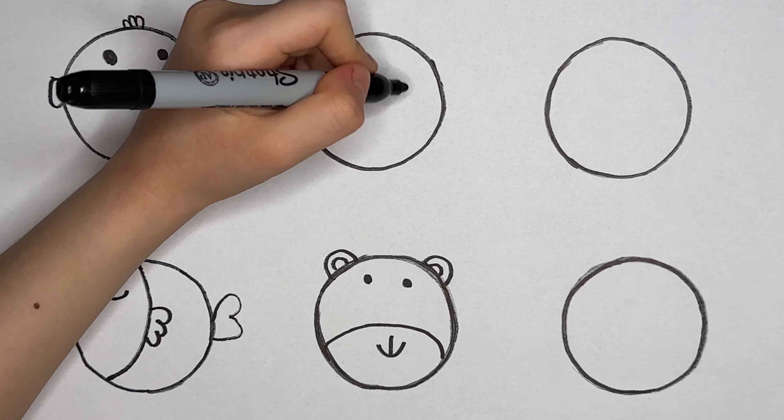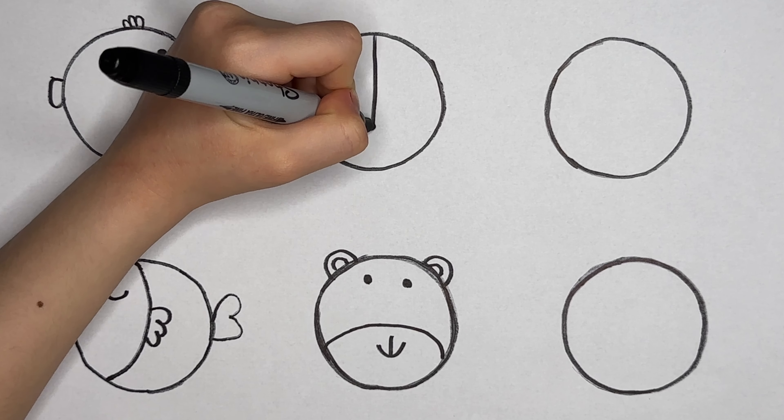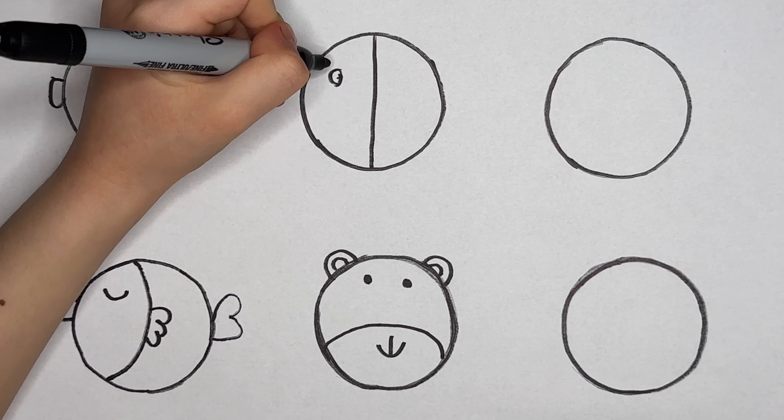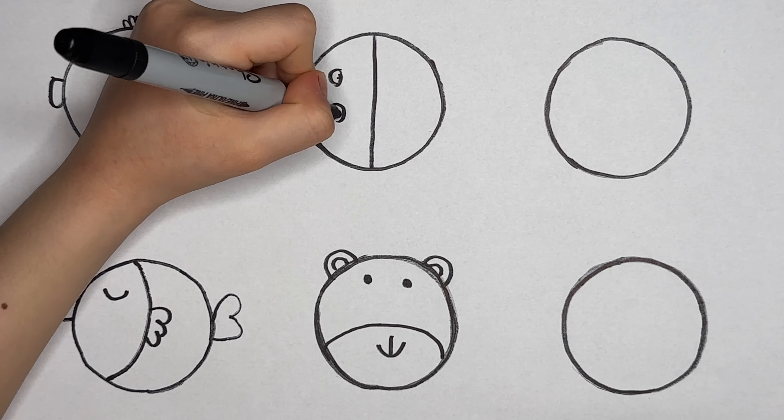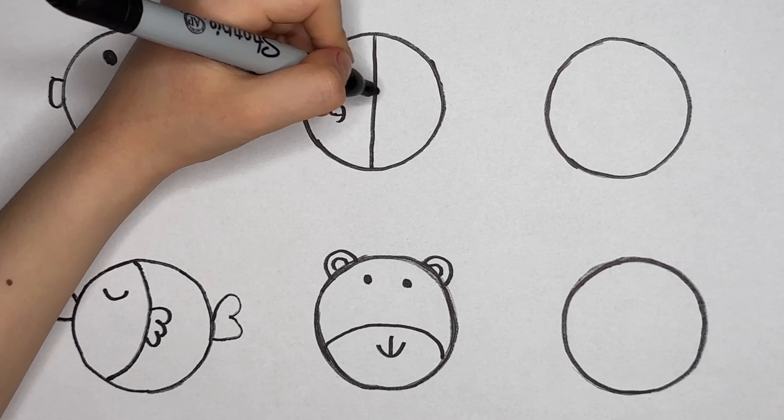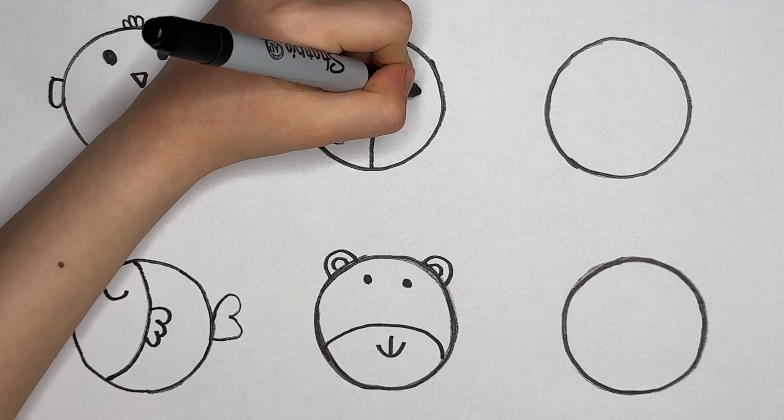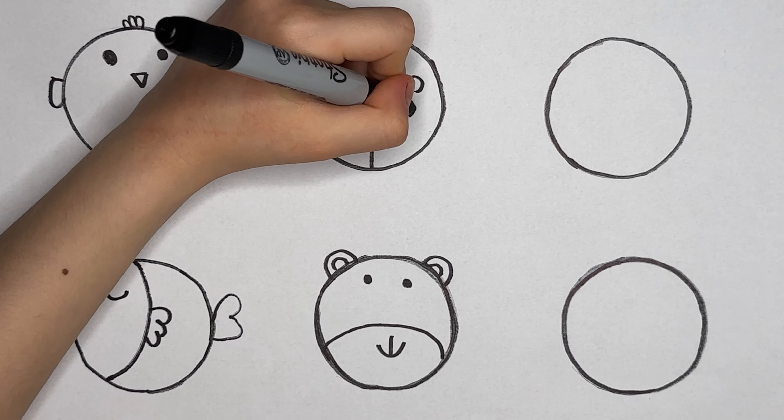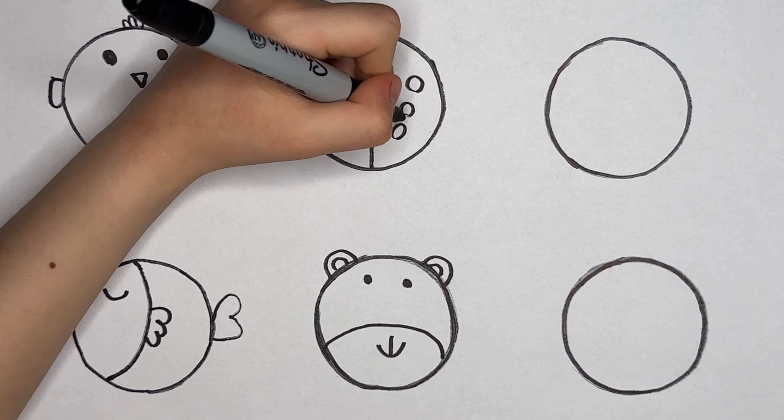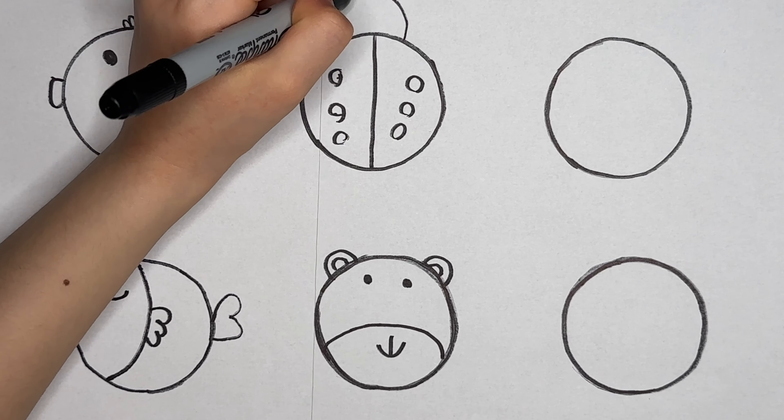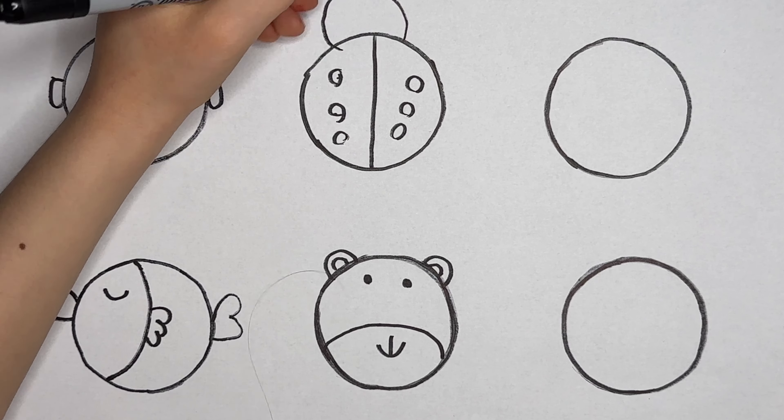This circle is going to be a ladybug. Straight line like this. Let's add dots. The mouth is going to be like this. Here it is.